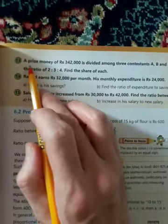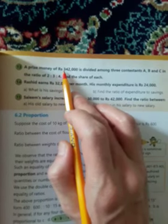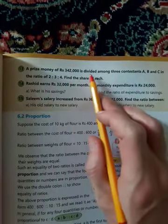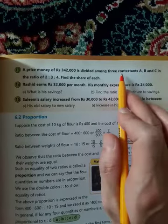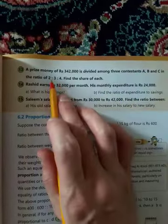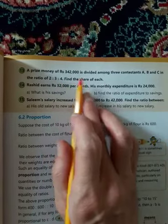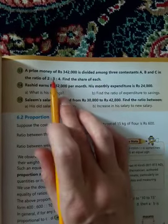Question number 13: A prize money of 342,000 rupees is to be divided among three contestants A, B, and C in the ratio 2:3:4.